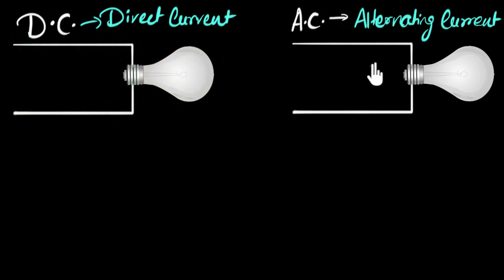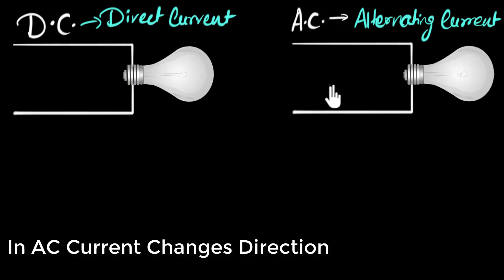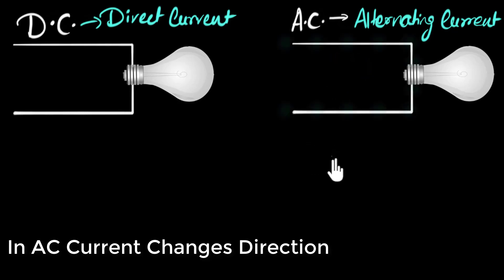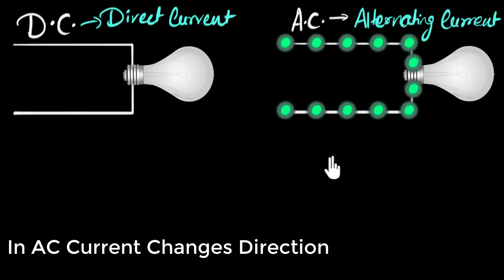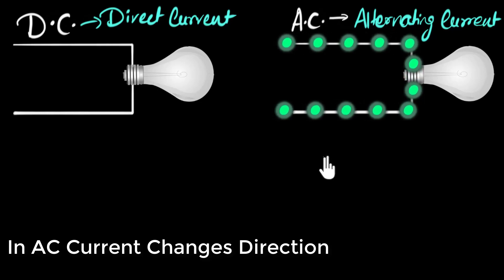What about alternating current? Well, this is where the current keeps changing its direction continuously. Once the current would flow this way, then the current would change and flow the opposite direction, then go back and forth. If you could visualize the electrons, you would see the electrons are going back and forth, back and forth, like this.